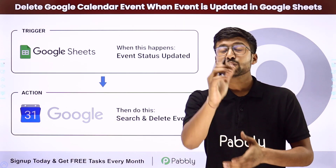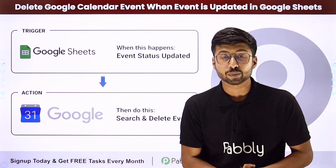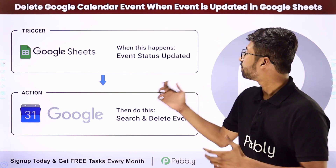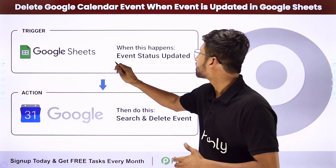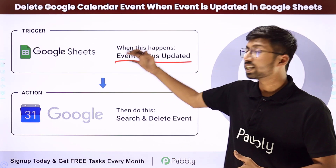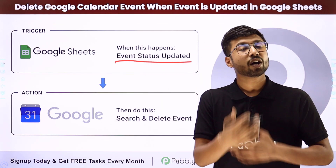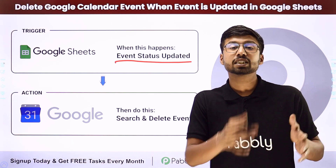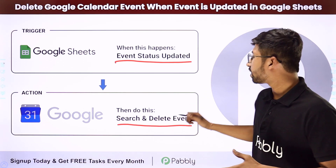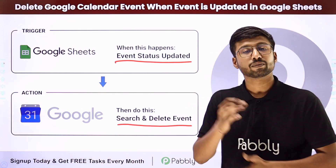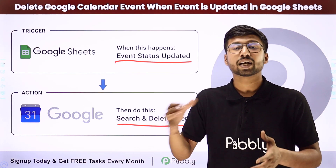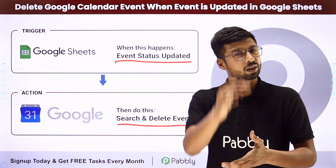You can actually automate this process. In this automation, whenever the event status is updated as cancelled or deleted in Google Sheet, automatically and instantly that same event will be deleted from your Google Calendar account. We are going to search for that event in Google Calendar and delete it.